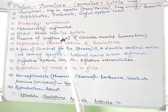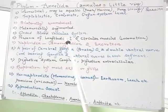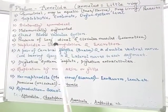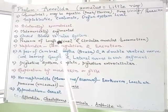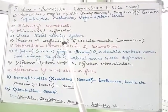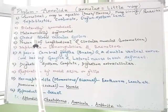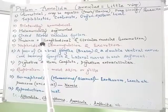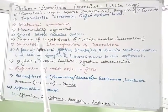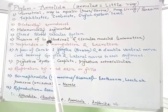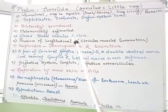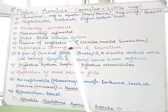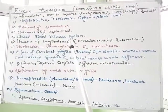They have a closed blood vascular system, meaning blood flows through a closed network of tubes to circulate nutrients and waste products within the body. Annelida is the only exceptional group among invertebrates that shows a closed blood vascular system, similar to vertebrates.